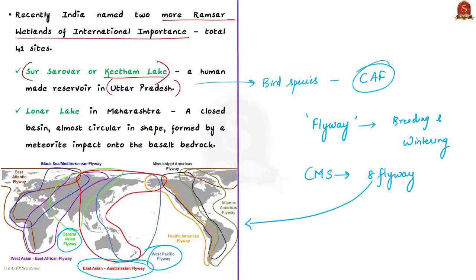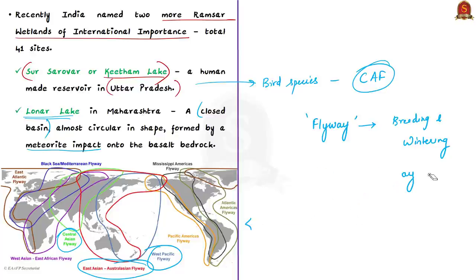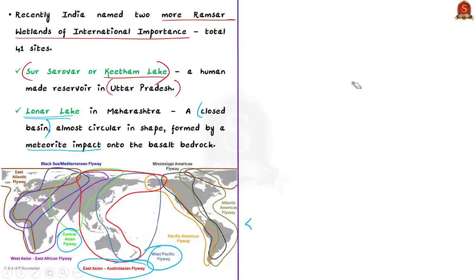The second newly named Ramsar Wetland of International Importance is Lonar Lake, located on the Deccan Plateau in Maharashtra. Lonar Lake is an endorheic basin — a closed drainage basin that retains water and allows no outflow to external bodies of water such as rivers or oceans. Lonar Lake is almost circular in shape, formed by a meteorite impact on basalt bedrock. The site includes the lake, escarpments forming crater walls, and a forested zone. This lake was recently in news because the color of the lake had turned pink.